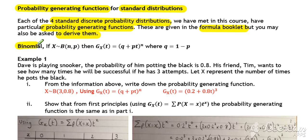So first of all, we look at a binomial. Binomial distribution parameters n and p. Then our result for our probability generating function will be G_X(t) = (q + pt)^n, where q is 1 minus p. That's our formula that's given in the formula booklet that you can just quote and use, unless the question asks you to derive the result.